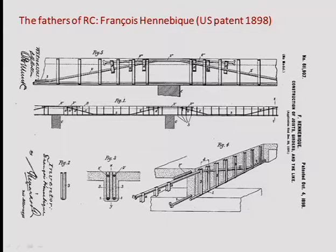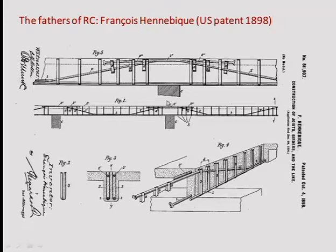Looking at a US patent from 1890, you can see a profile of a beam section with supports where the steel follows the bending moment diagram — going up and down along the beam — while concrete takes the compression forces. There are also other bars completing the cage, mainly used to react to shear.